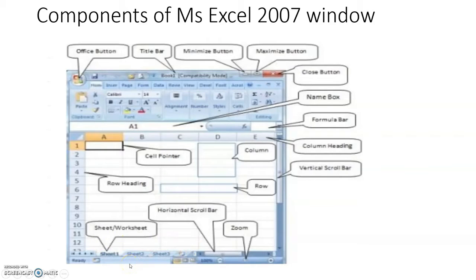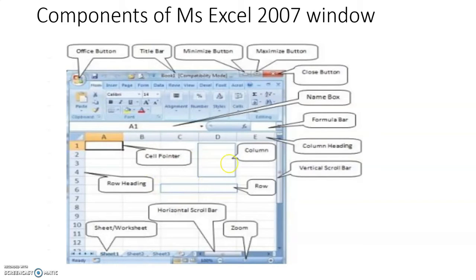Look at the bottom of the window — it is called the status bar. The status bar has a sheet tab. By default, Sheet 1 is the active sheet. There is also a horizontal scroll bar in the status bar area. The right side of the application window has a vertical scroll bar. The center part is called the worksheet, which is also called a spreadsheet.